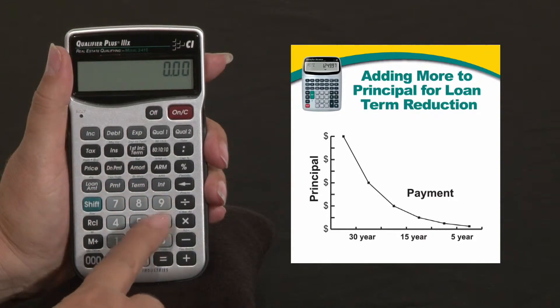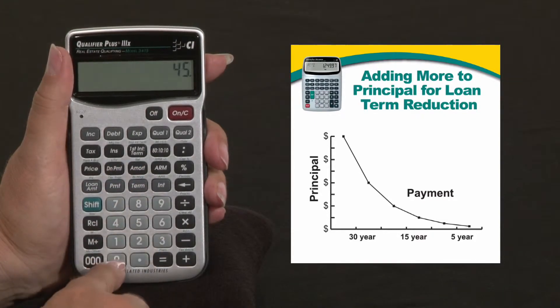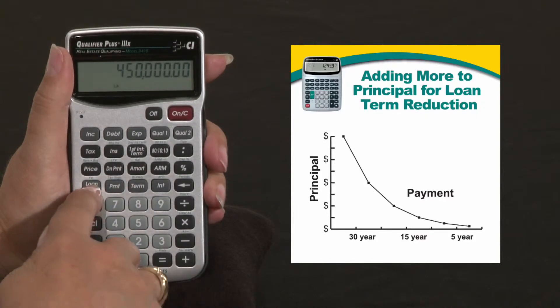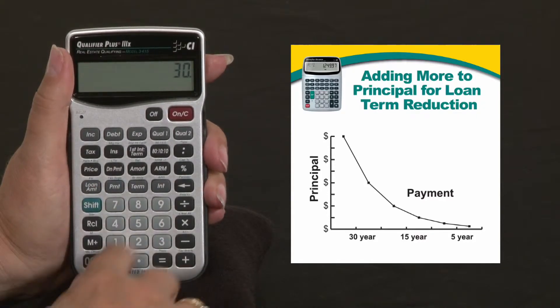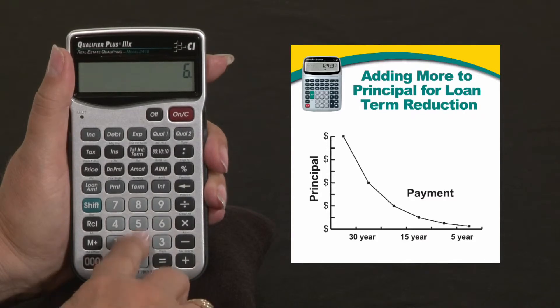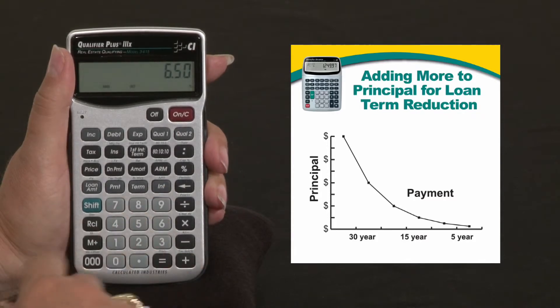We can enter our loan amount and a term of 30 years. We can give them a 6.5% interest rate and solve for the P&I.